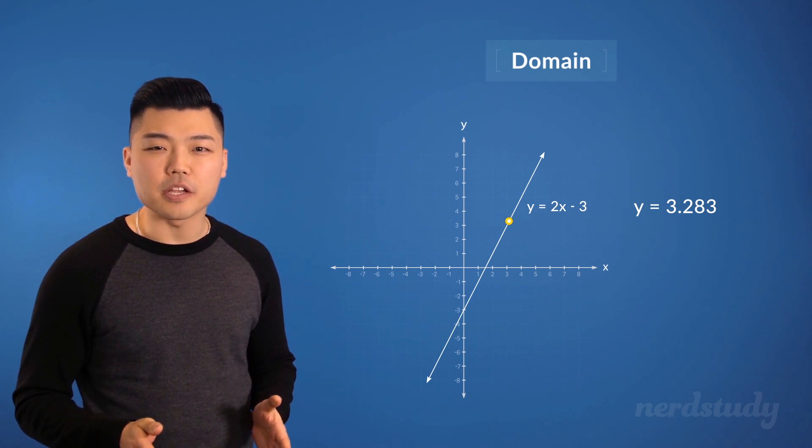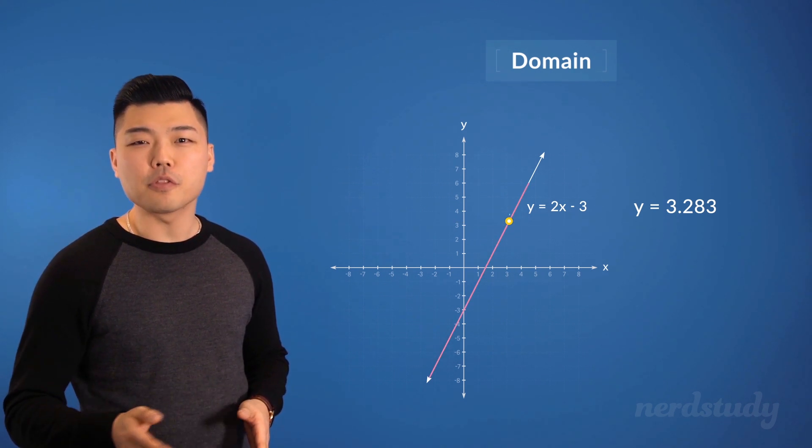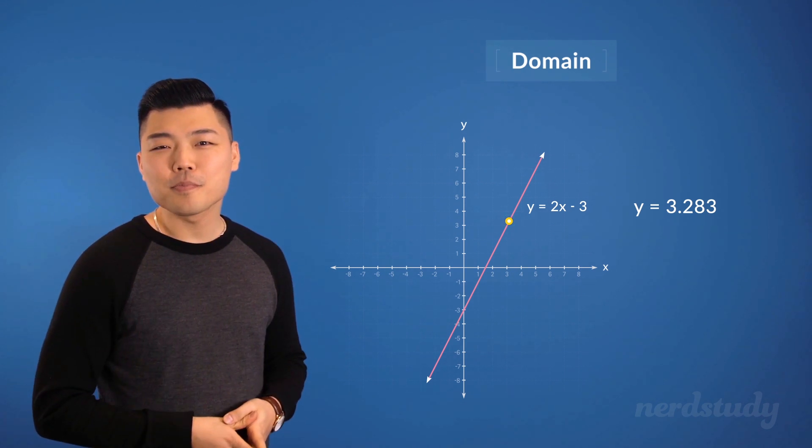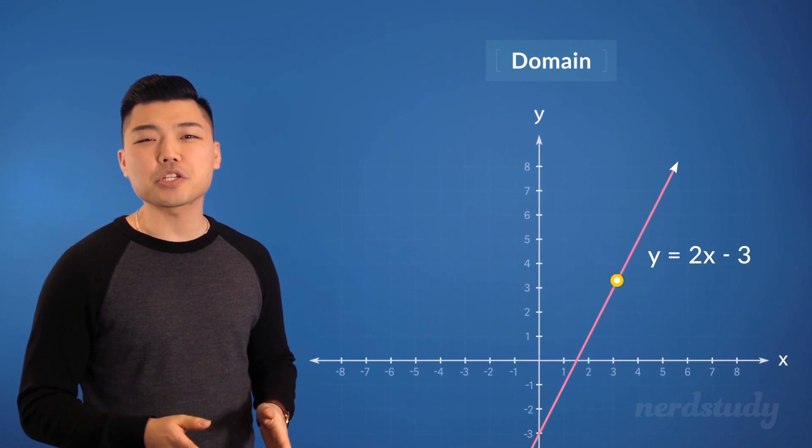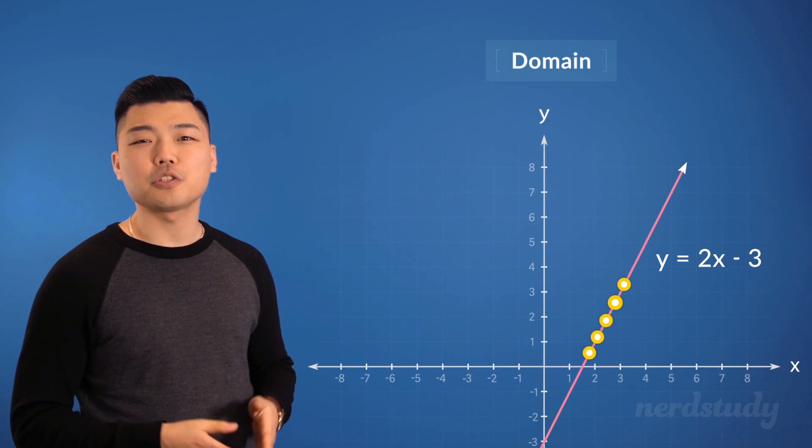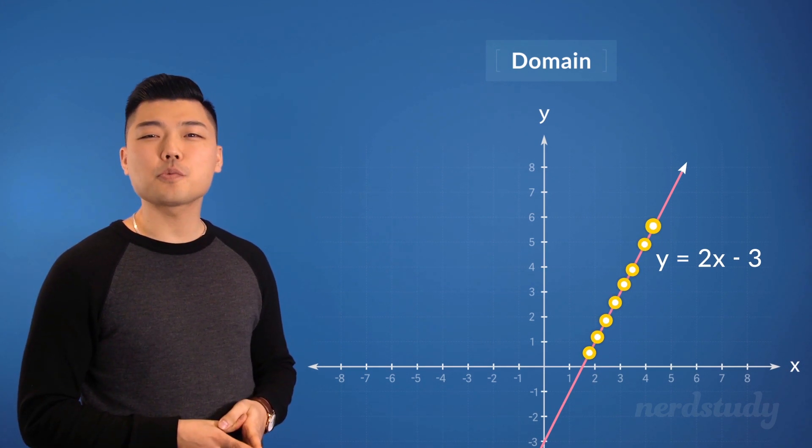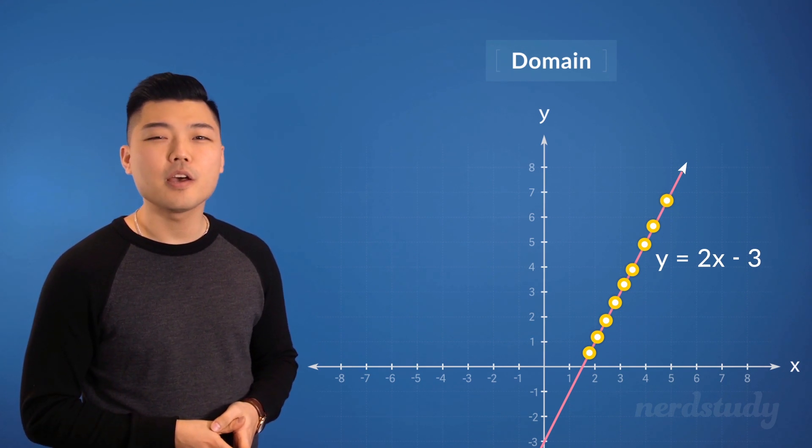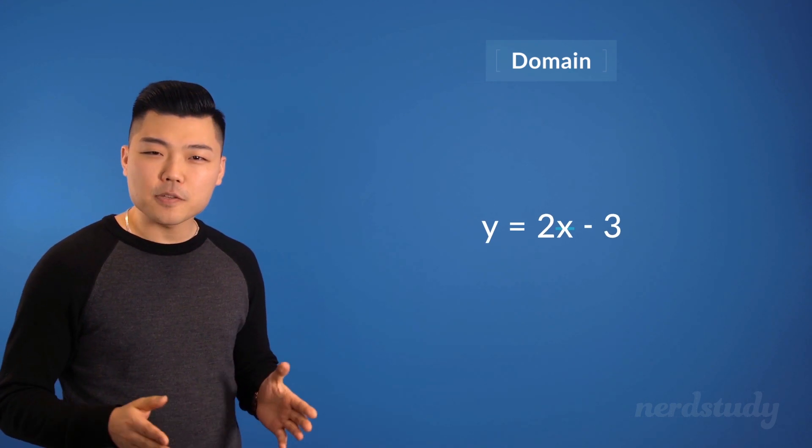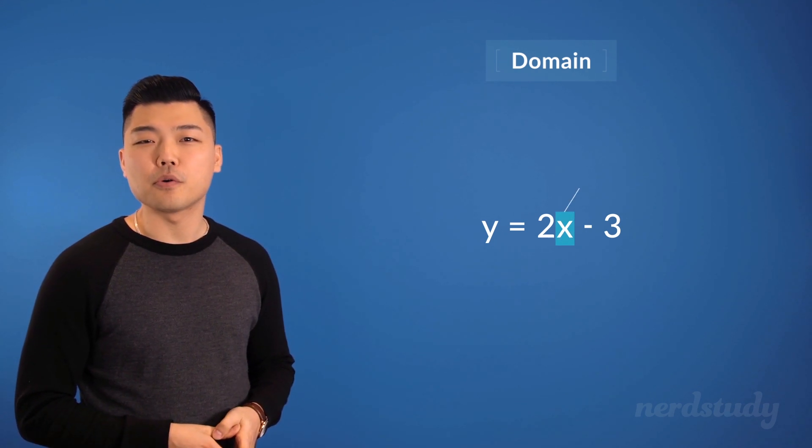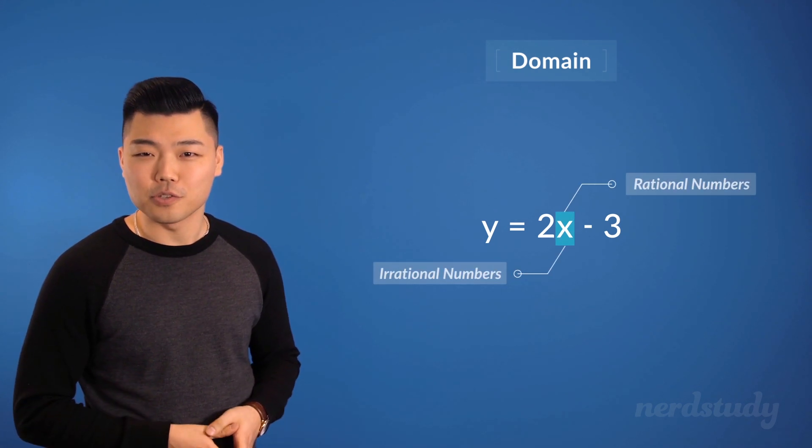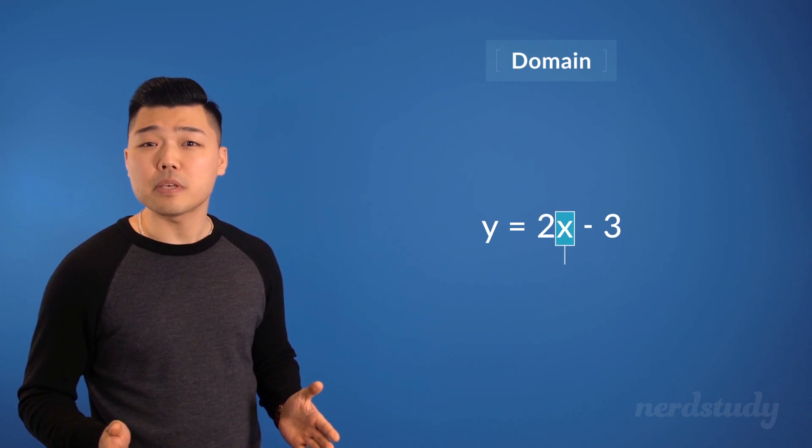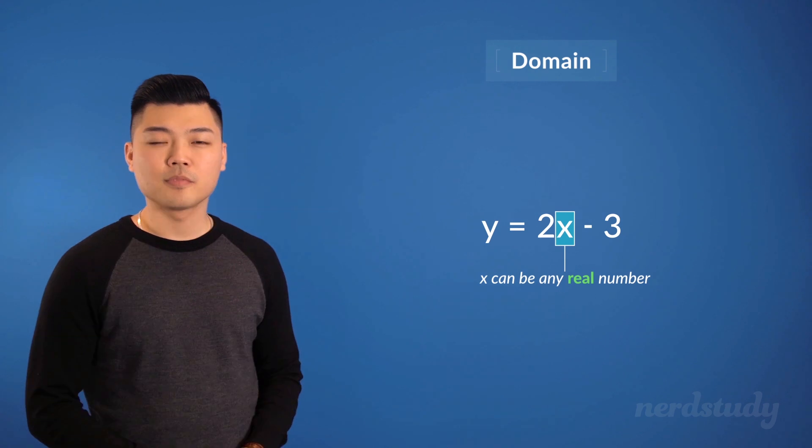Notice how the continuous line just goes right through this point. In fact, since it's continuous, you can imagine how many rational numbers and irrational numbers the function went through, even just within this small segment that we can't even account for. Since the x value can be inputted as both rational numbers or irrational numbers, we can say that the x value can be any real number.